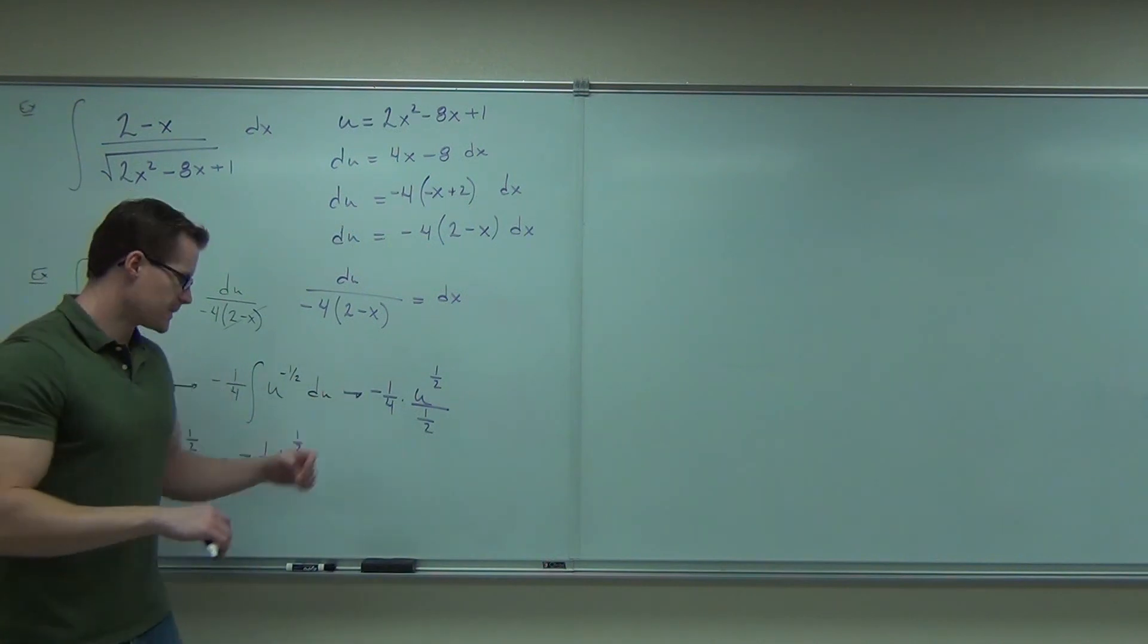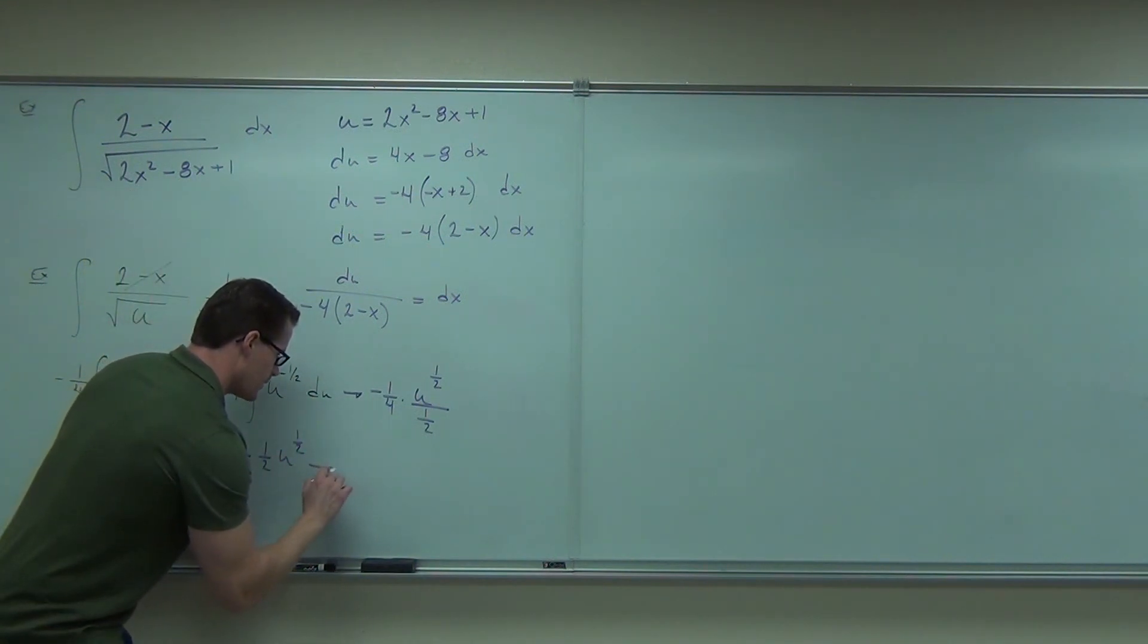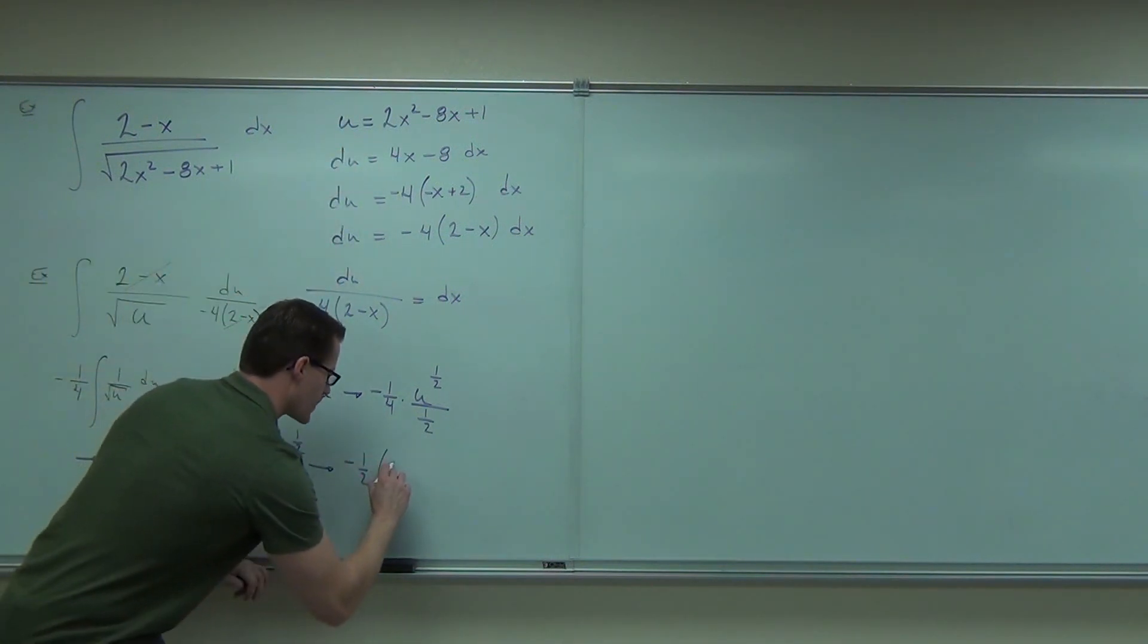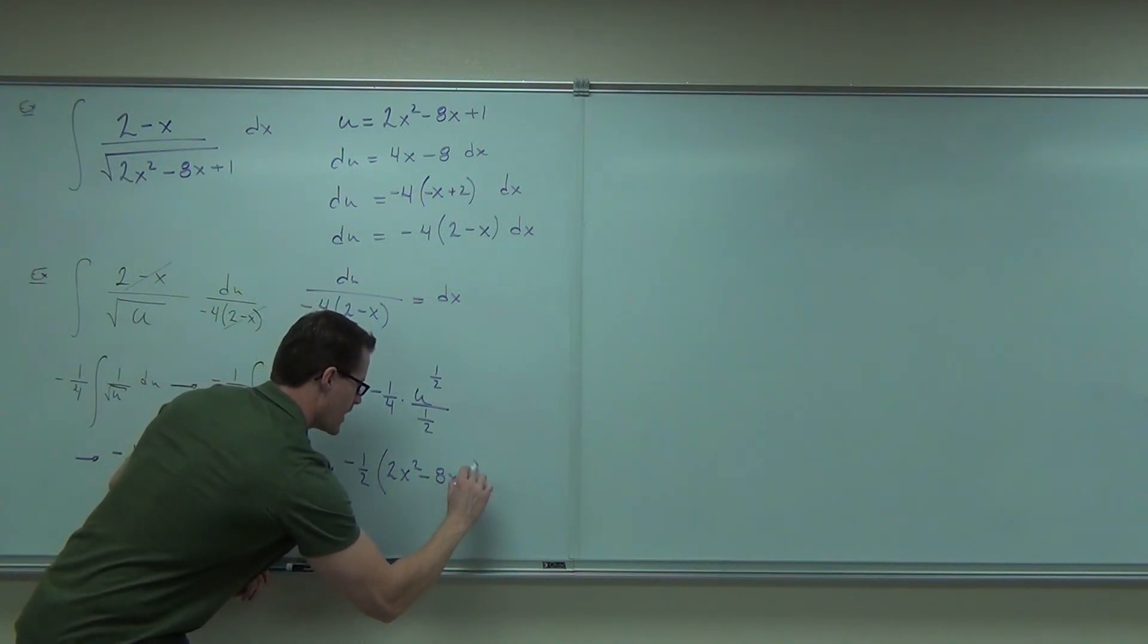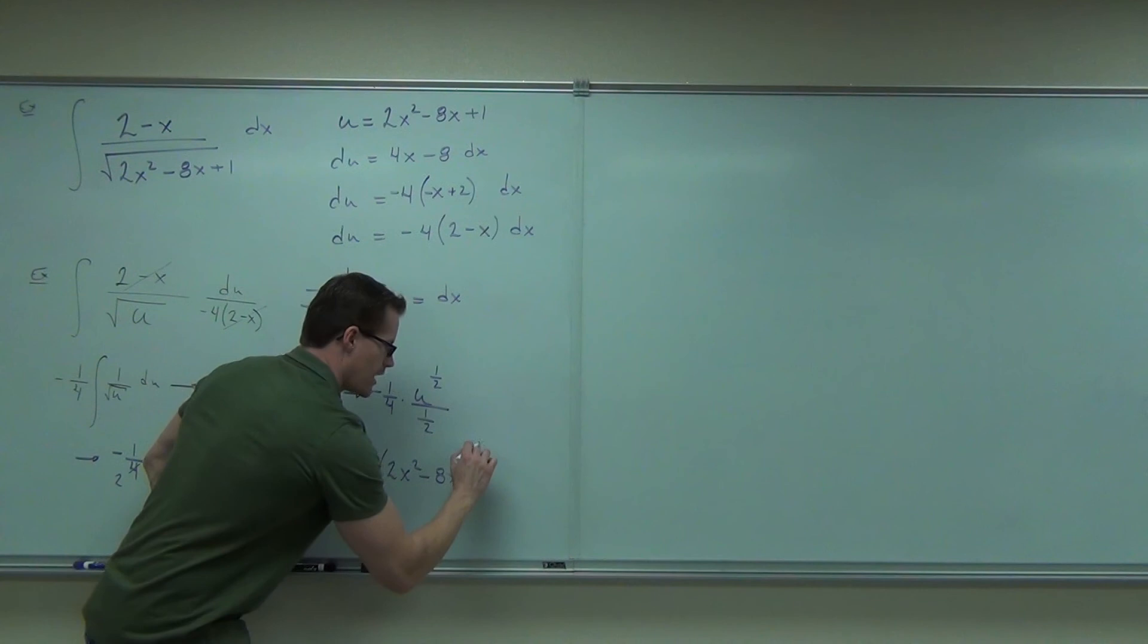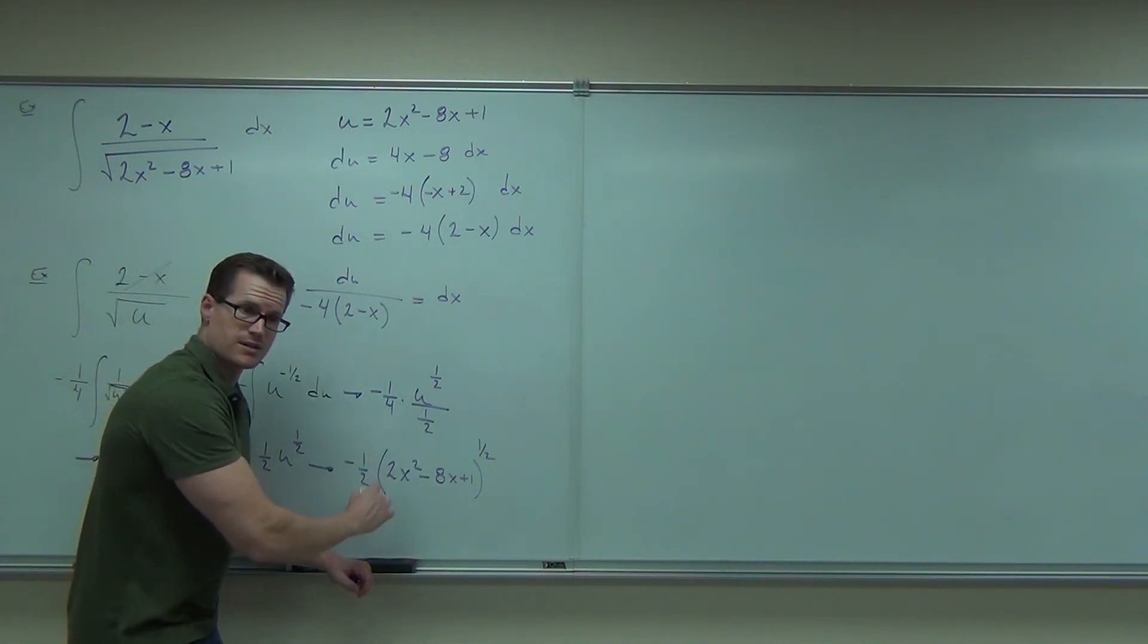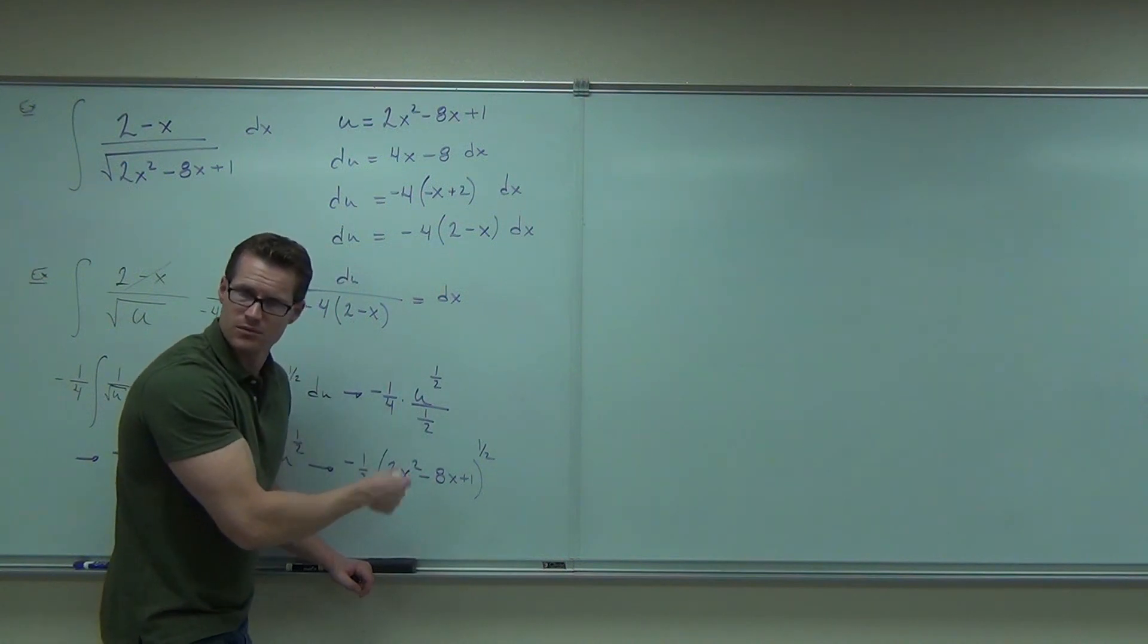What we've got to do now is what? Plus c. Yeah. So I'll make it negative one half. U becomes whatever we had for our substitution. That's two x squared minus eight x plus one to the one half power. What's the one half power again? So could you write this as a square root instead of that one half? Sure you could. That's fine. Plus c.